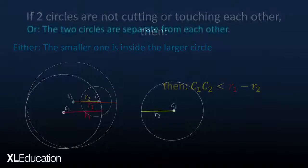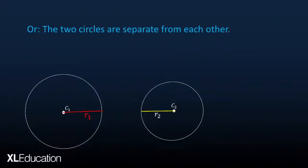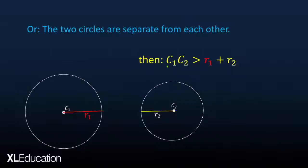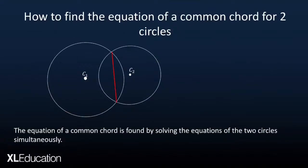The next situation is when the two circles are separated — not cutting and not touching each other. In this case, the distance between the two centers must be greater than the sum of the two radii.